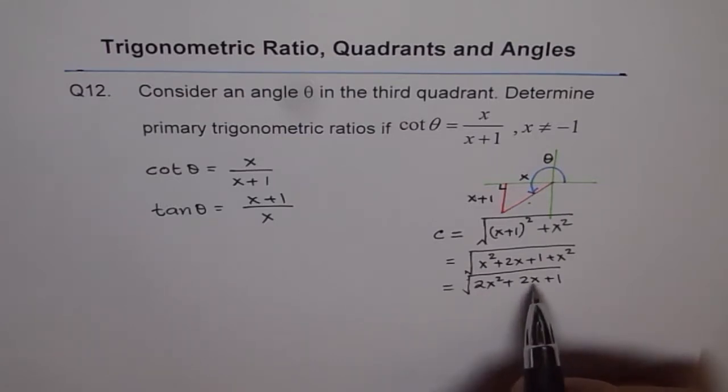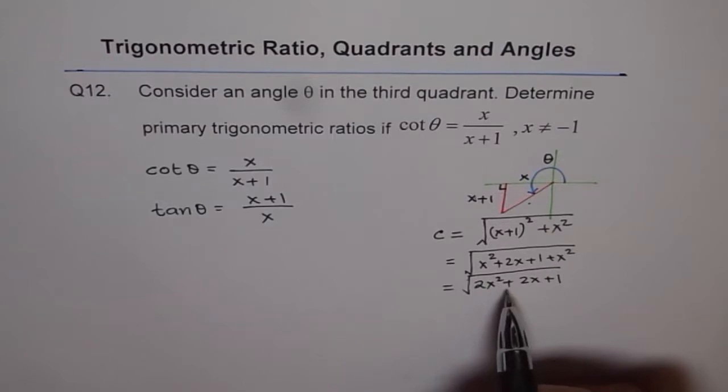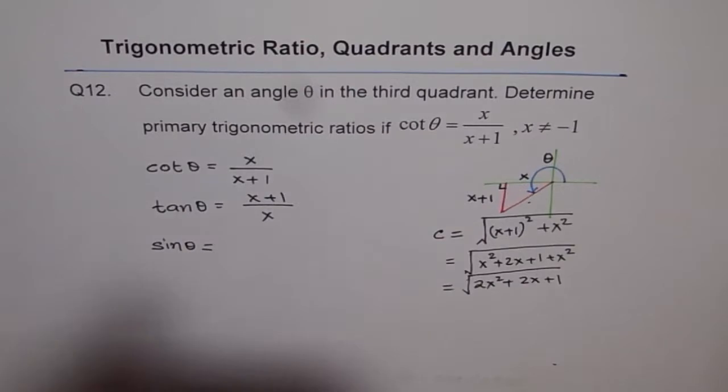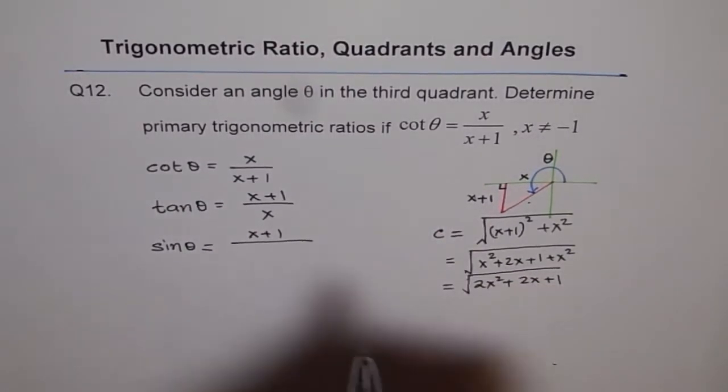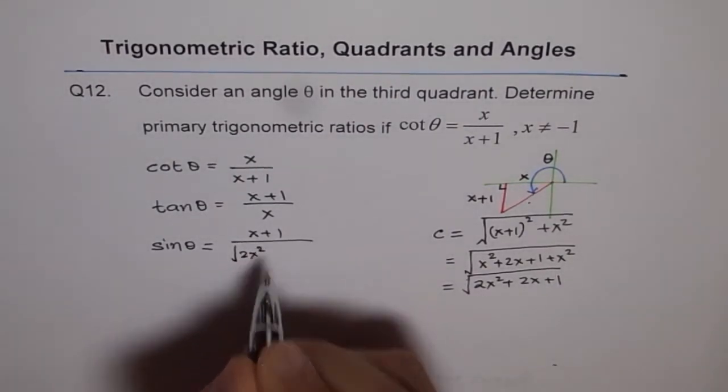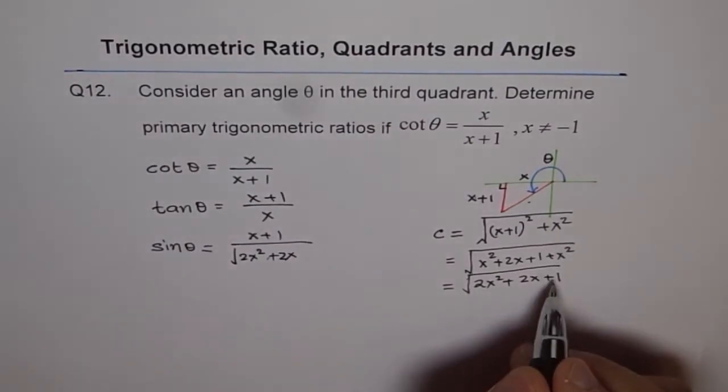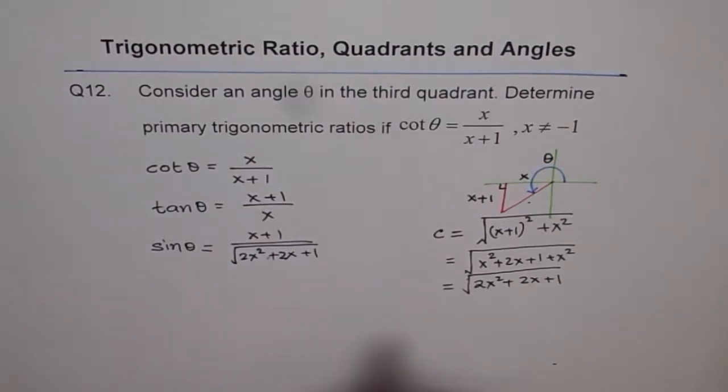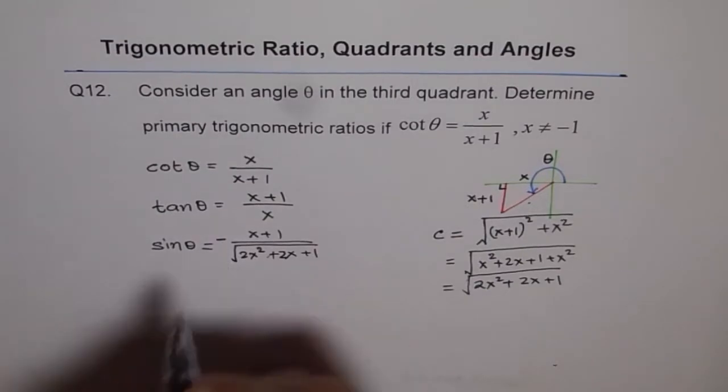Now, since this is the expression of hypotenuse, we can write sine and cosine in these terms. So we have sine theta equals opposite side, which is x plus 1 over this expression. It is 2x square plus 2x plus 1 under the square root. And since you are in quadrant 3, this has to be negative. So we will write a negative sign here. This is very important.